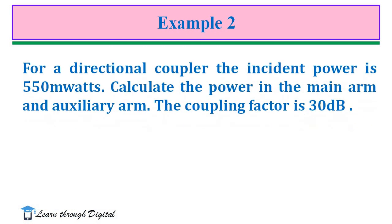Second example. For a directional coupler, the incident power is 550mW. Calculate the power in the main arm and auxiliary arm. The coupling factor is 30dB.